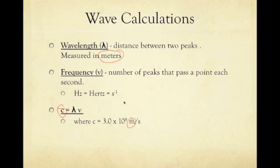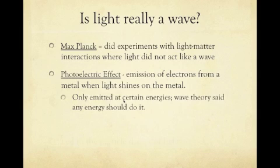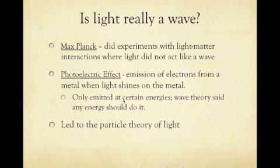As we studied more about light, we had to ask ourselves: is light really a wave? Max Planck did an experiment with light-matter interaction where light didn't act like a wave. We saw a photoelectric effect, meaning the emission of electrons from a metal when light shines on the metal. He saw that it only emitted a certain energy. The wave theory says that any energy should do it, but we only saw certain specific energies. This led to the particle theory of light, meaning light as a thing, not just as a wave but as a particle, as something with substance.